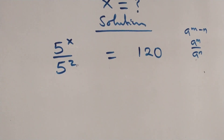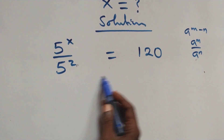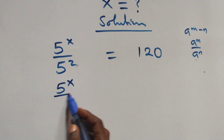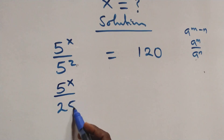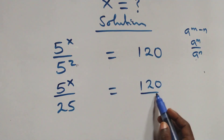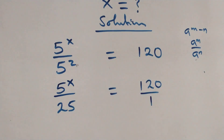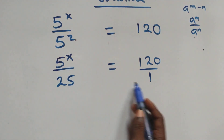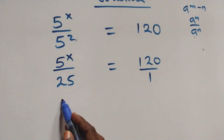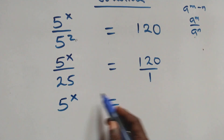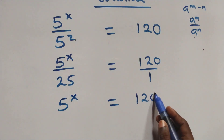From here we can write this as 5 raised to power x over 5 squared — 5 times 5 that's 25 — equals to 120. The next step here we cross multiply, so 5 raised to power x times 1, which is the same thing as 5 raised to power x, equals to 120 times 25.